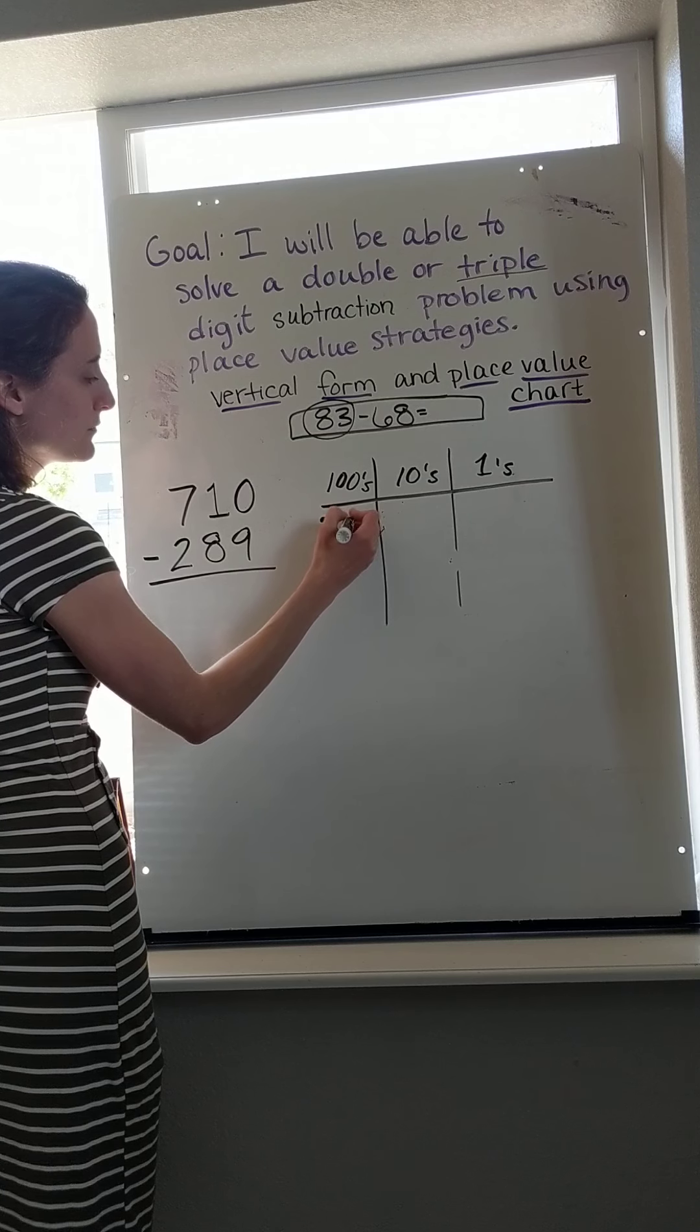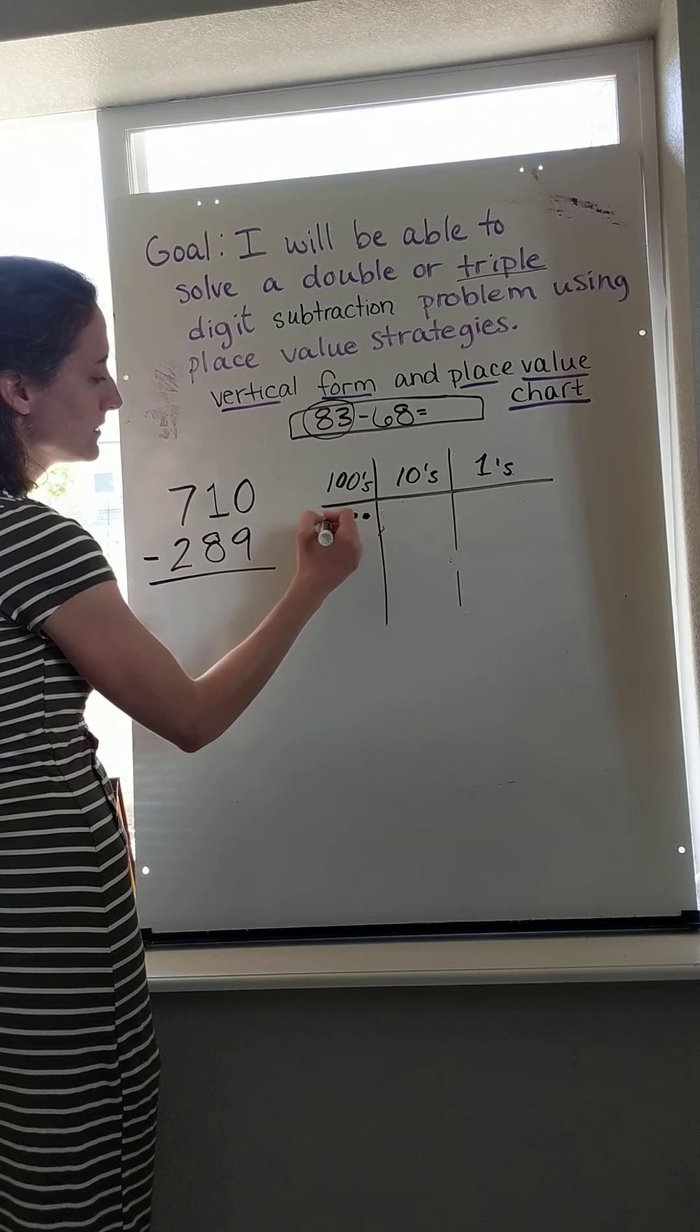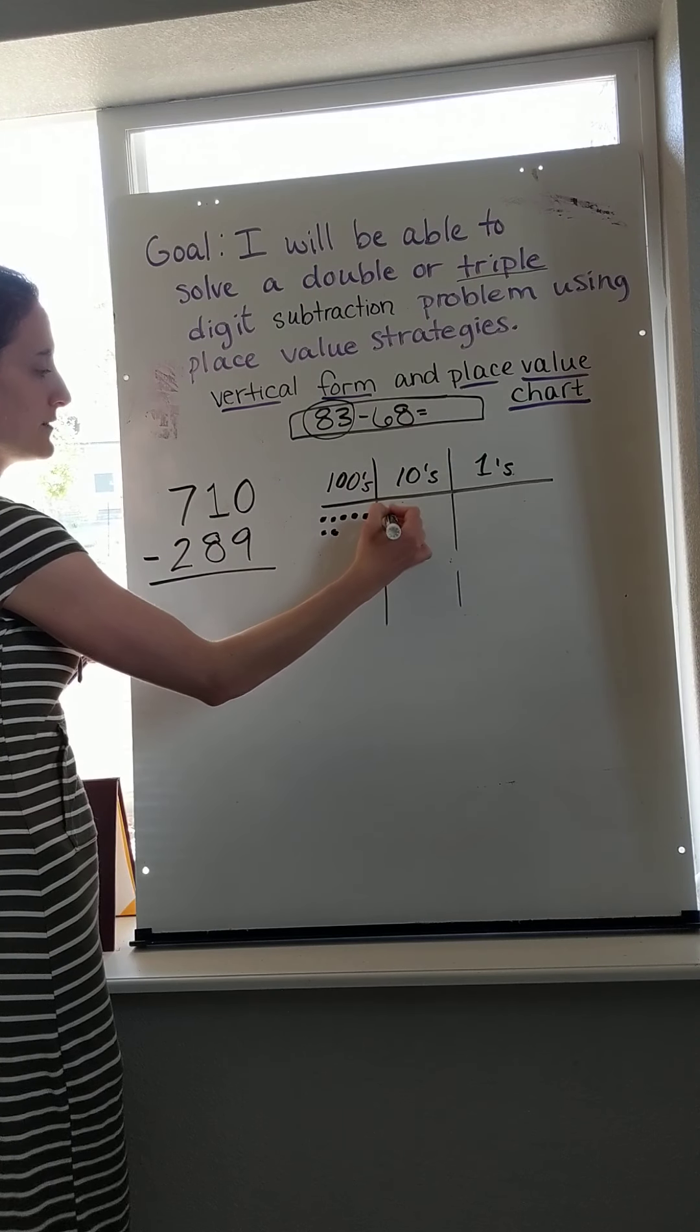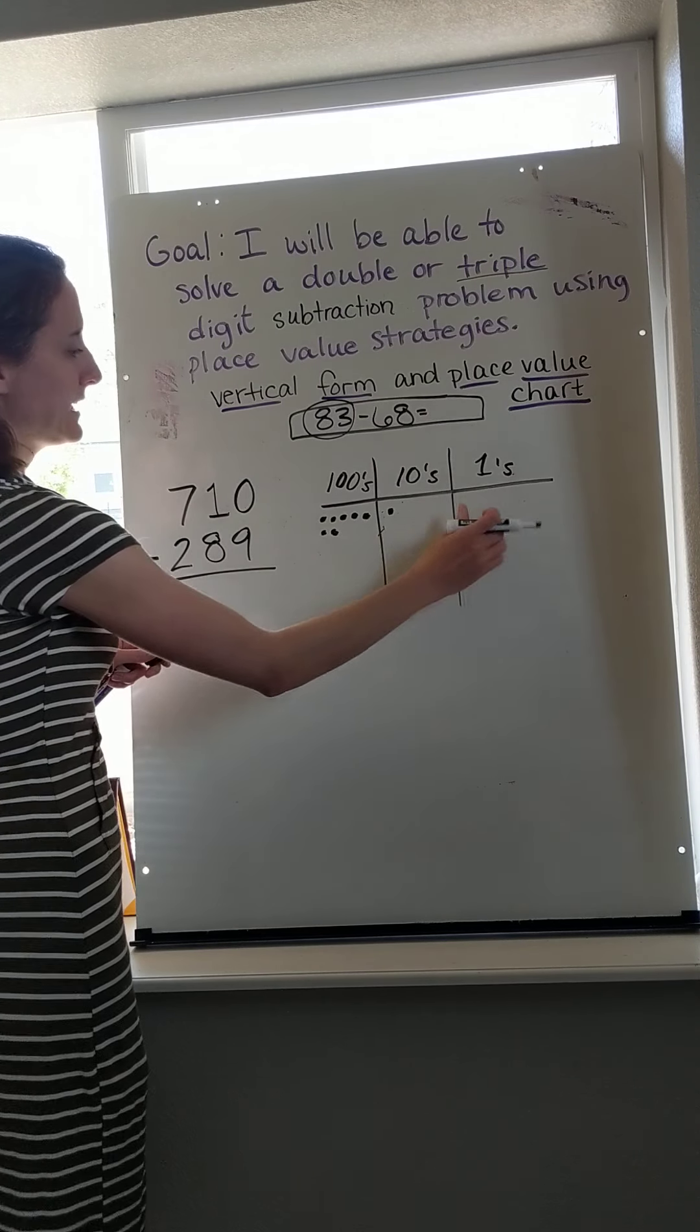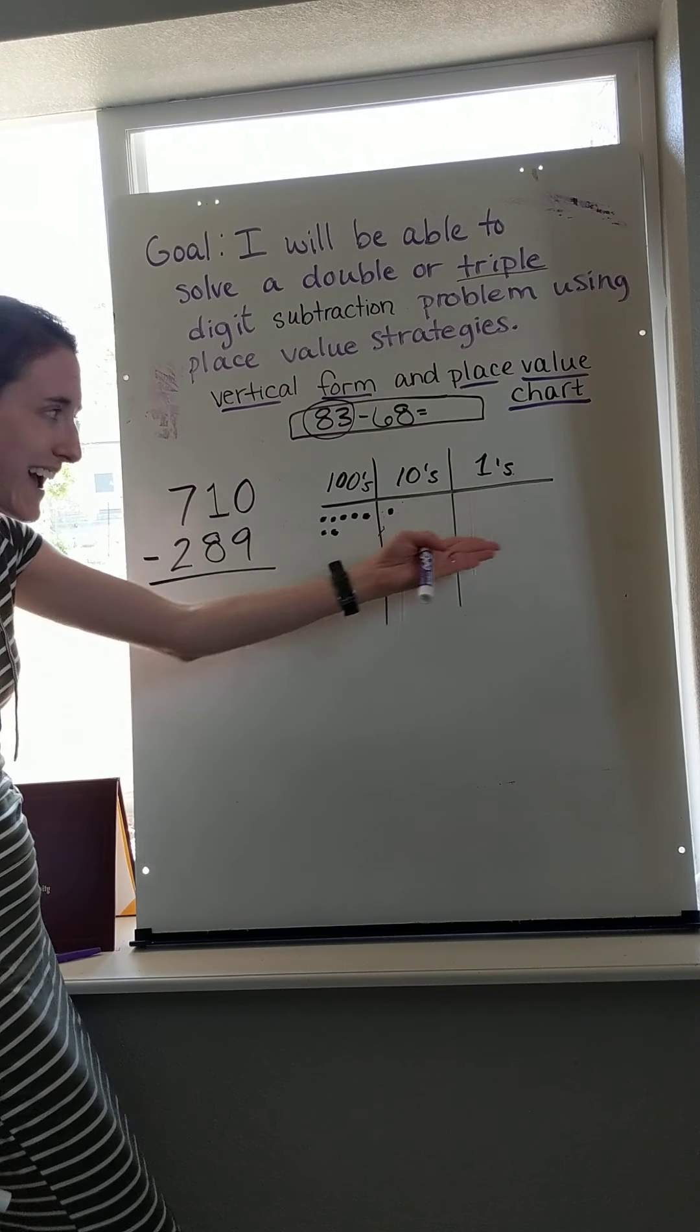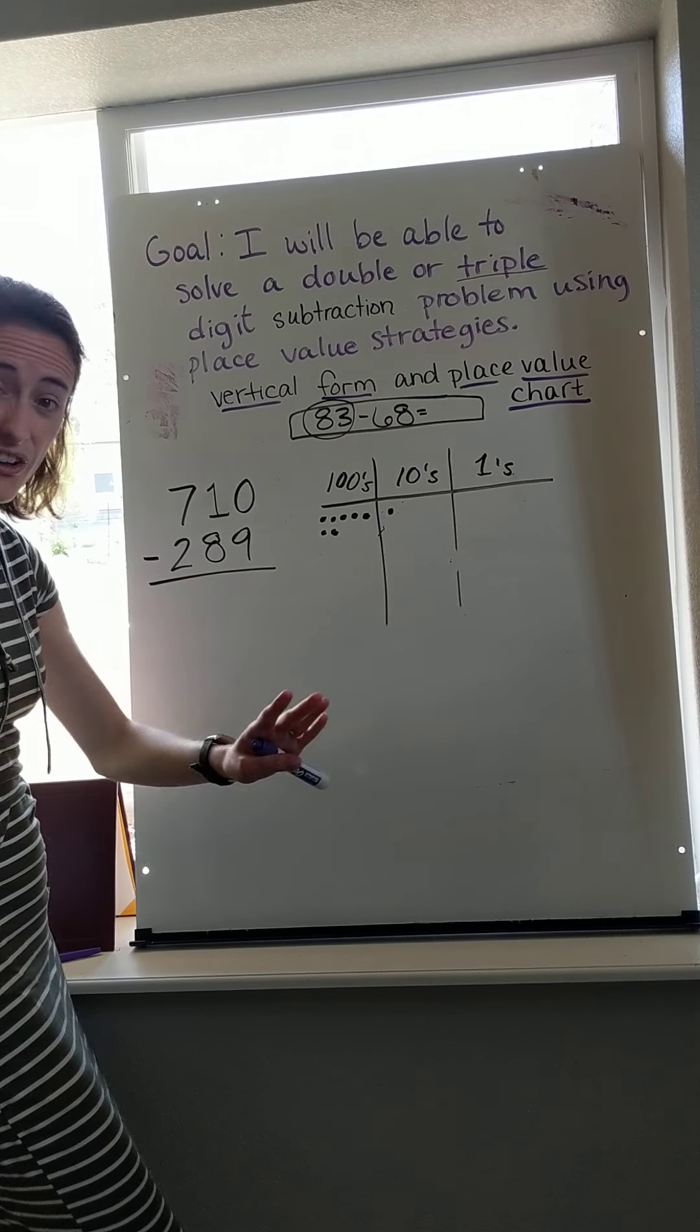100, 200, 300, 400, 500, 600, 700 - that's 710. And then I have nothing in my ones. How in the world am I supposed to take away nine? I don't have anything there, nothing at all.